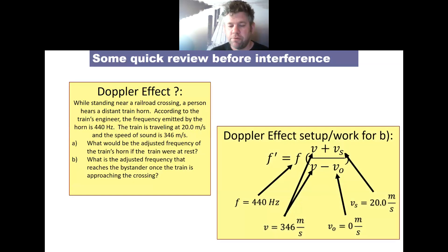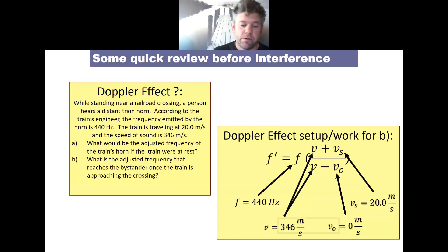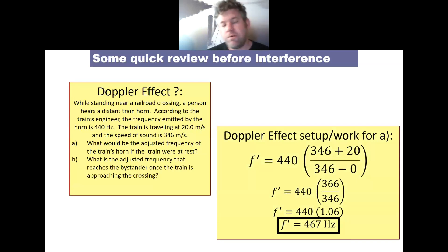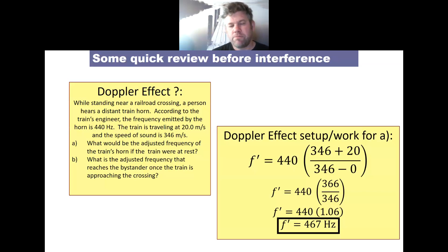Second question: what frequency does the bystander hear as the train approaches? Original frequency is still 440 Hz, wave speed is 346 m/s, source is moving toward the observer at 20 m/s. Because it's moving toward us, we add 20 to the top: (346 + 20) / (346 - 0) × 440 = 366/346 = 1.0606 × 440 ≈ 467 Hz. That's the perceived frequency the bystander hears.